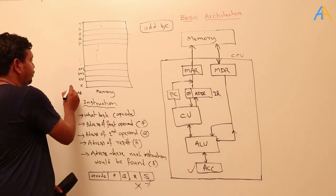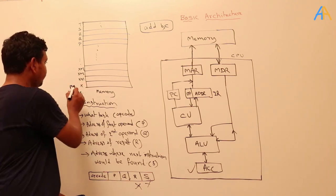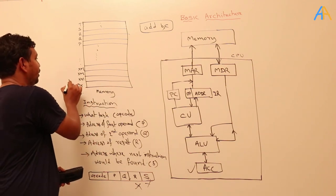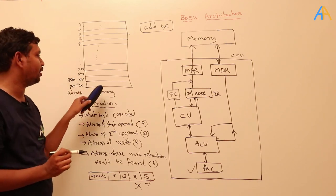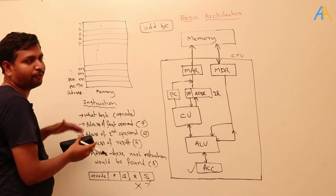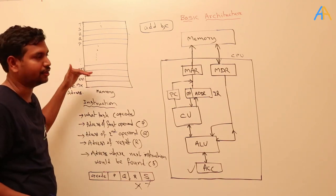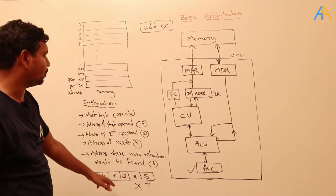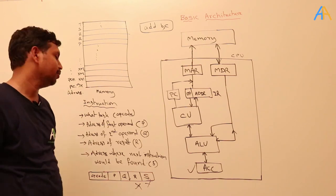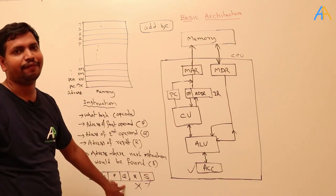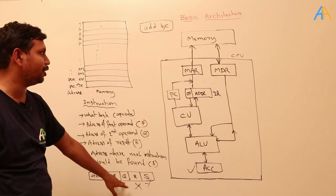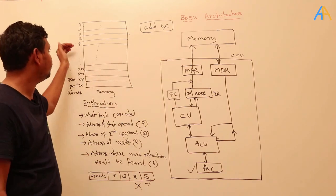Initially the program counter points to the first instruction. Once the instruction is fetched, the program counter is incremented to point to the next instruction. After executing each instruction, it keeps incrementing sequentially, fetching instructions one by one. The instruction code contains the opcode — what it has to do — and the addresses of the data. For example, ADD B C specifies the addresses of B and C.